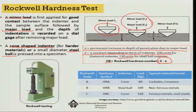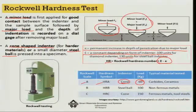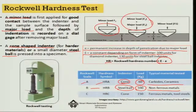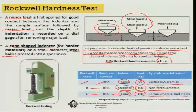There are three scales of the Rockwell scale. Scale A (HRA) uses a cone-shaped indenter with a 60 kg load; it is used for carbides and ceramics. Scale B (HRB) uses a steel ball indenter with a 100 kg load and is used for non-ferrous metals. Scale C (HRC) uses a cone-shaped indenter with a 150 kg load and is used for ferrous metals and tool steels. That is the Rockwell hardness test, and a typical Rockwell hardness machine can be seen here.